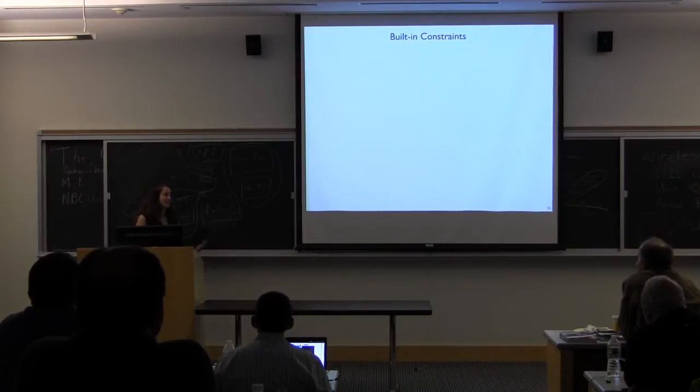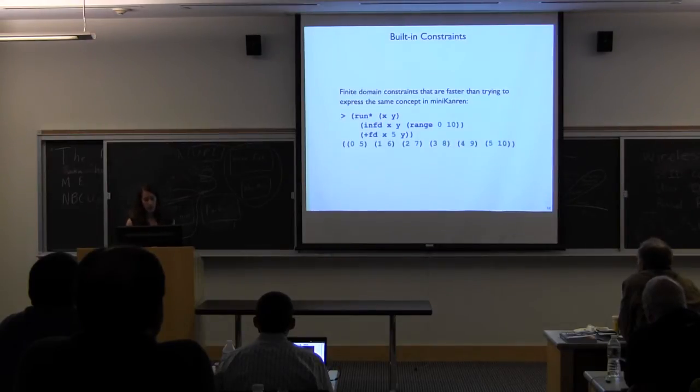So I'm going to move on to the kinds of constraints that you're going to encounter if you start using C-Cannon. So you can use finite domain constraints, which are an improvement over what you can do in Minicannon, because in Minicannon, you basically have to say x can be 0, or 1, or 2, or 3, or 4, and just enumerate all the possibilities.